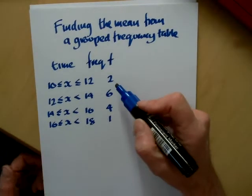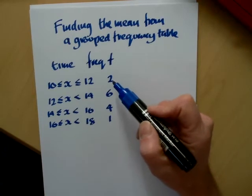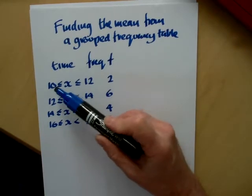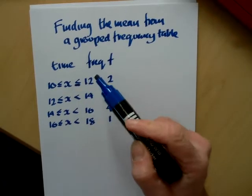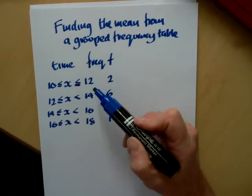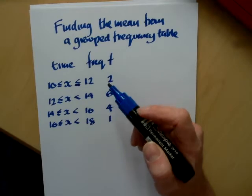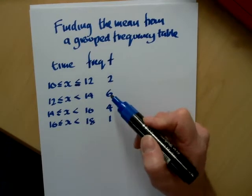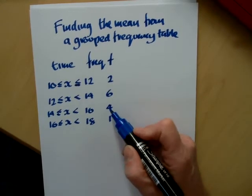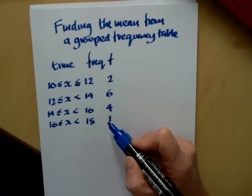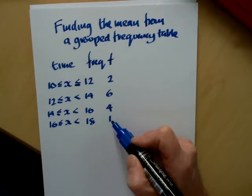So what we've been told is that there are two people who've run, let's say, 100 metres between 10 and 12 seconds. Now this is a little mistake here so we'll just cross that out. So up to 12 seconds but not including 12. So two between 10 and 12 seconds, six from 12 up to 14 seconds, four between 14 and 16 seconds, and one person between 16 and 18 seconds.